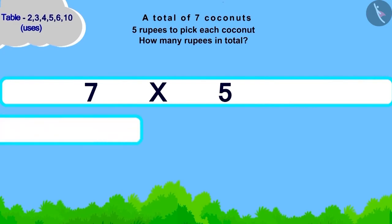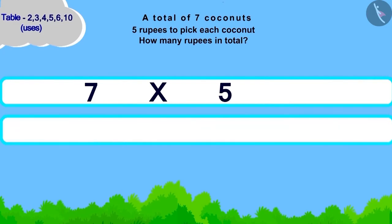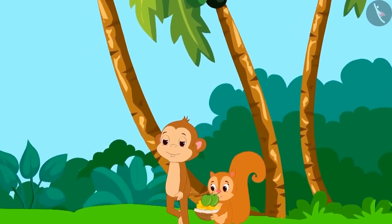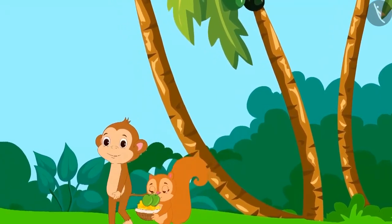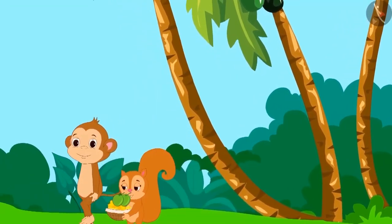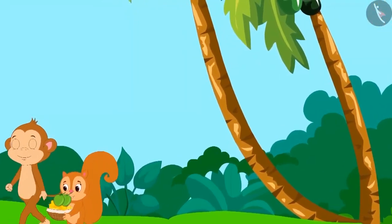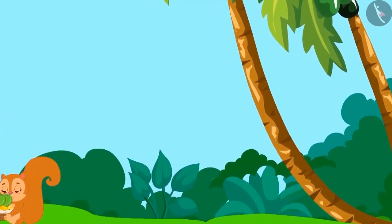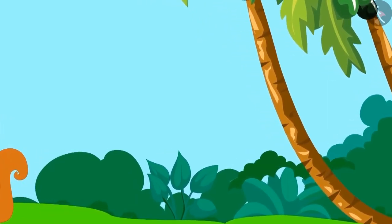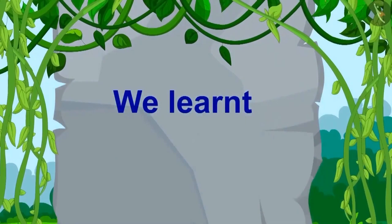Children, you have solved this correctly. Chanda will have to give thirty-five rupees to Babban. Chanda collected the coconuts and gave money to Babban. Now, both of them went to rest under a tree.